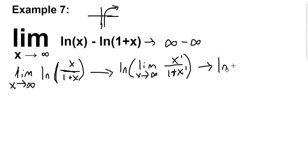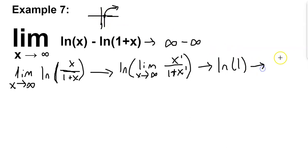So we have ln of 1 left over. The graph of ln of x crosses the x-axis at 1, meaning ln of 1 equals 0, and that is our final answer for this question.